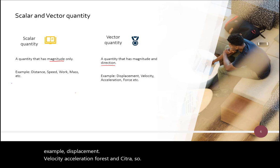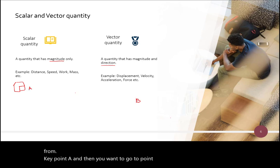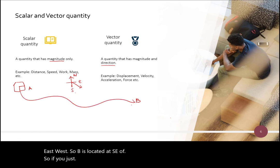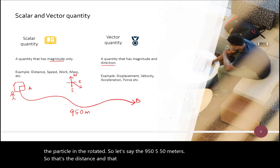So, I'll give you an example. So, let's say this is point A, where you are from. Okay, and then you want to go to point B. Right? So, this is north, south, east, west. So, B is located at south-east of A. So, if you just, if you don't mind about the direction, you just, if let's say a girl travels from A to B. And this is the path taken, the road taken. So, let's say the road takes 950 meters. So, that's the distance. And that was the scalar quantity.